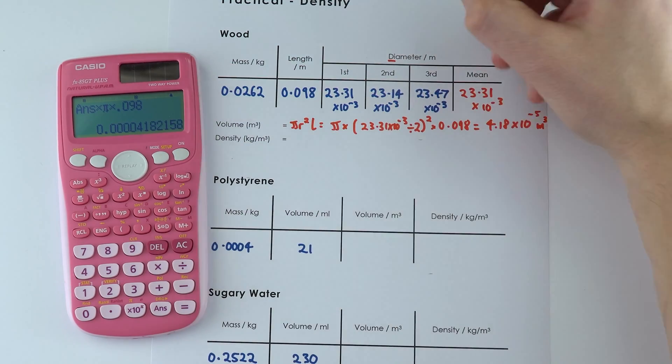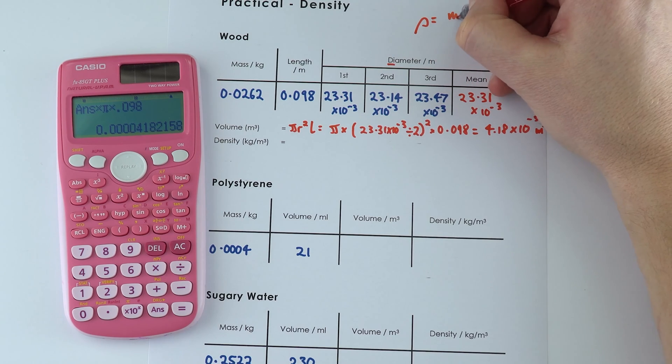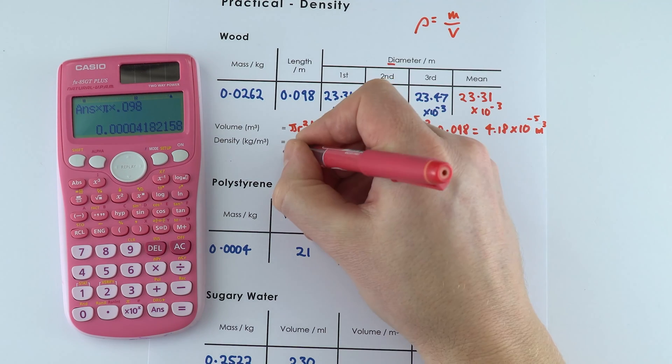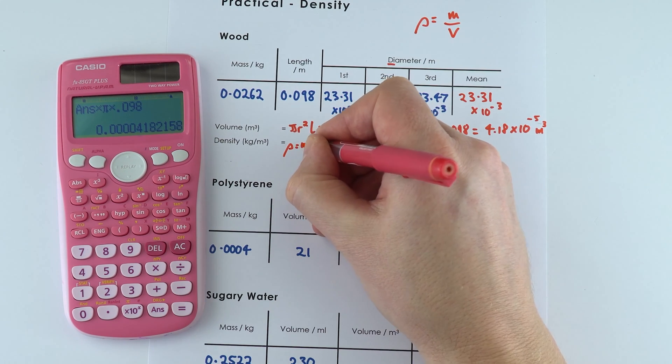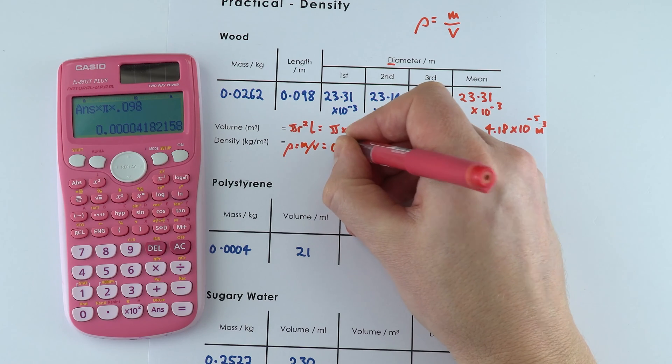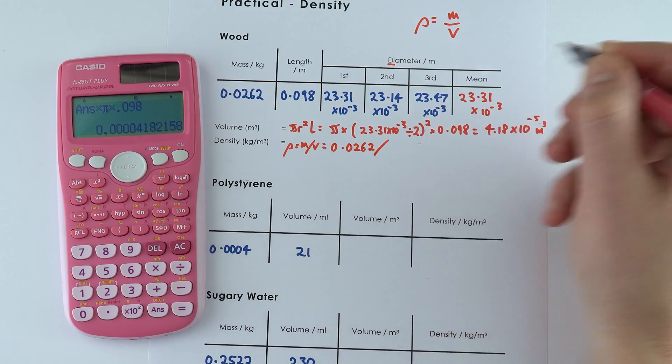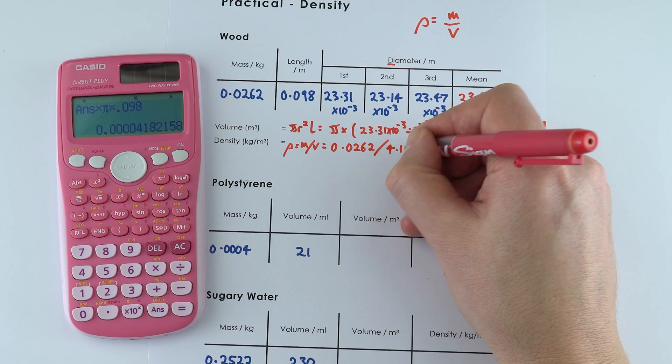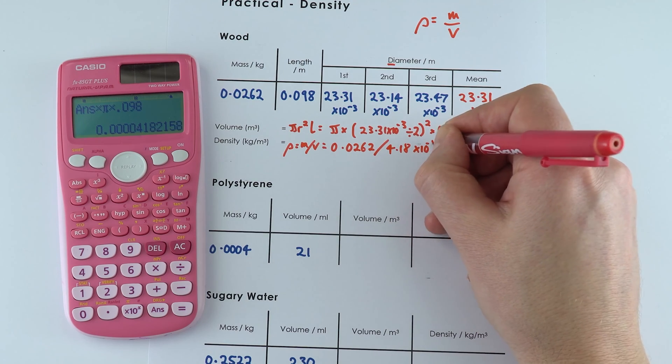Now to work out the density, the density is equal to the mass divided by the volume. So here the density is going to be equal to the mass over the volume which was 0.0262 kilograms divided by this value here 4.18 times 10 to the minus 5.